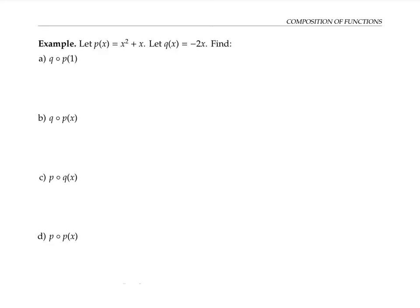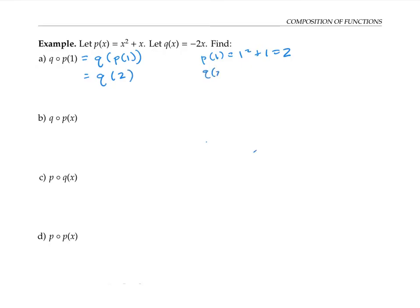Next, let's turn our attention to the composition of functions given by equations. P of x is x squared plus x, and q of x is negative two x. We want to find q composed with p of one. As usual, I can rewrite this as q of p of one and work from the inside out. P of one is one squared plus one, so that's two. So this is the same as q of two. But q of two is negative two times two, or negative four. So this evaluates to negative four.